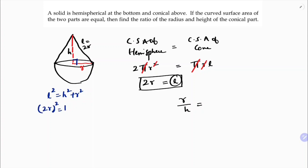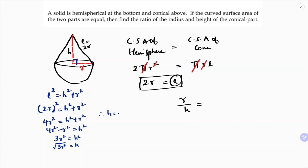Substituting l = 2r: (2r)² = h² + r², so 4r² = h² + r². Therefore, 4r² - r² = h², which gives 3r² = h². Taking the square root, h = √3 · r.